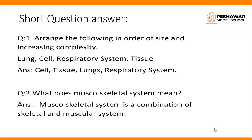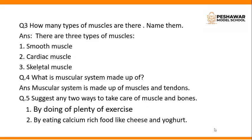Then question number 3: how many types of muscles are there? Name them. Answer: there are 3 types of muscles — smooth muscle, cardiac muscle, and skeletal muscle. Question number 4: what is the muscular system made up of? The muscular system is made up of muscles and tendons. And question number 5: suggest any 2 ways to take care of muscles and bones. Number 1, by doing plenty of exercise. And number 2, by eating calcium-rich food like cheese, yogurt, and milk.